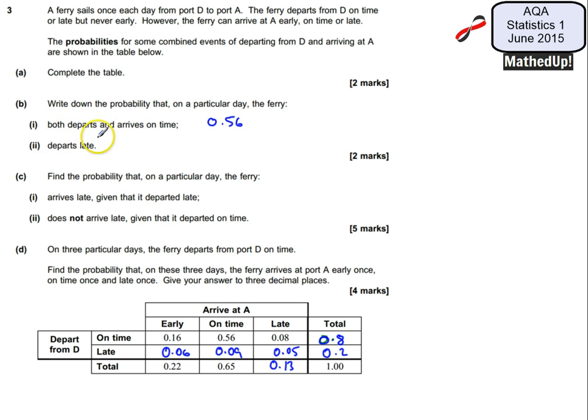And then we want to work out that it departs late. So if it departs late it's going to be over here the total value which is going to be 0.2. 0.2 to depart late and 0.8 to depart on time.